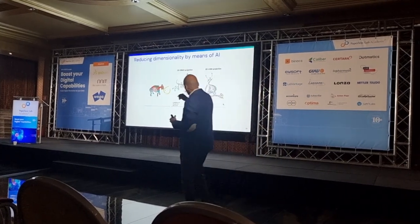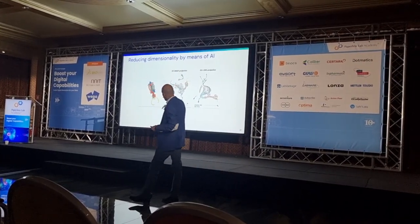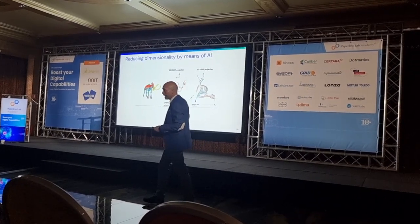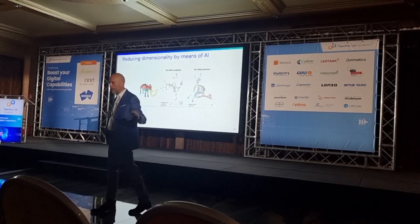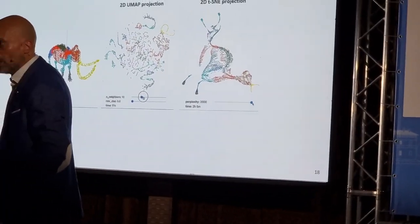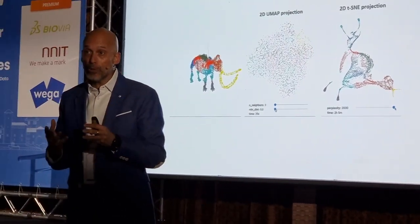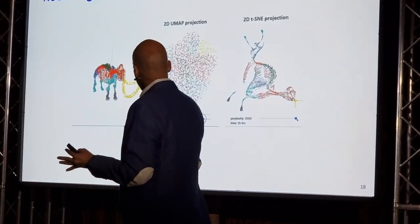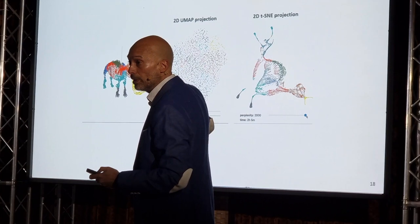Well, here you have the Uniform Manifold Approximation and Projection — the first algorithm — and the second algorithm, the t-Stochastic Neighbor Embedding. There are plenty of names, but at the end we have different ways using AI, where AI is able to understand what's happening in three dimensions with different attributes. So it's very easy to understand how AI is transforming three dimensions into just two dimensions.